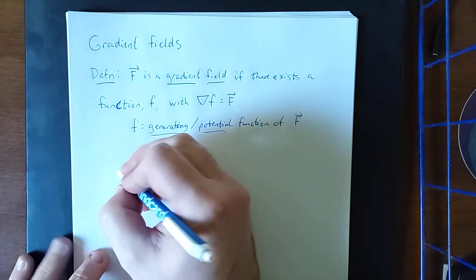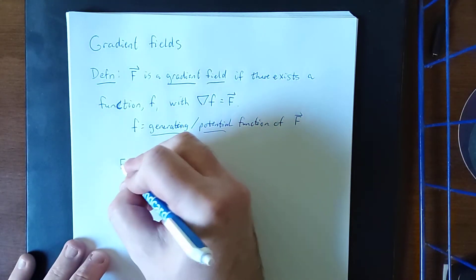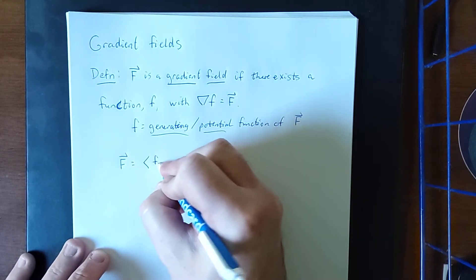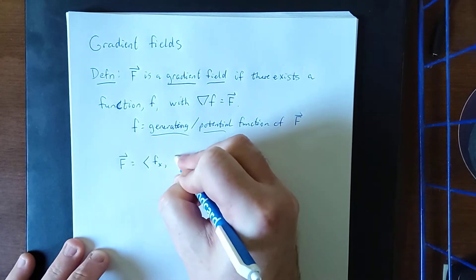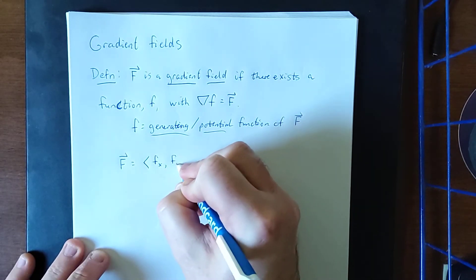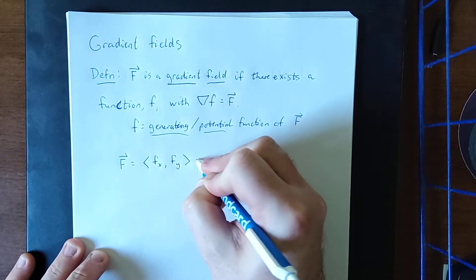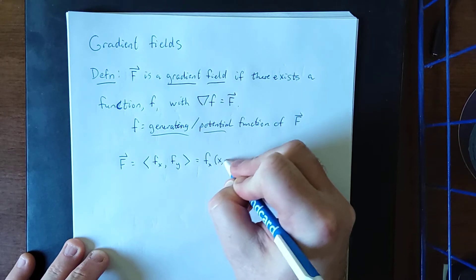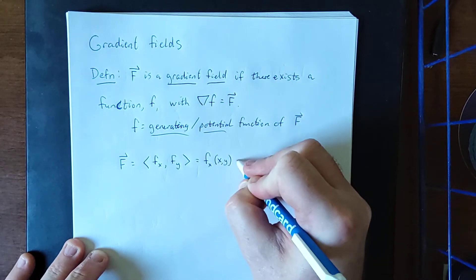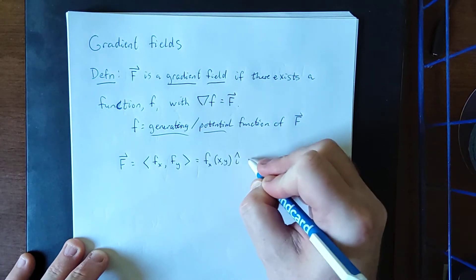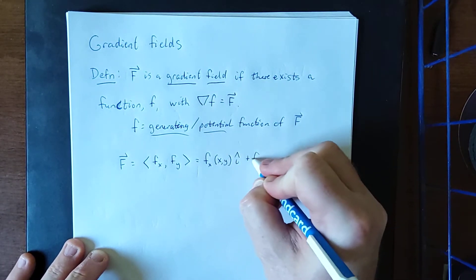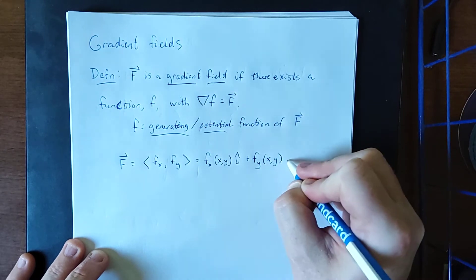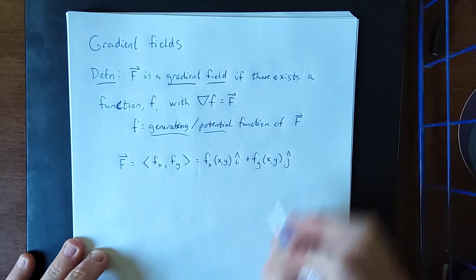Generally speaking, in two dimensions, that means you will be able to take a couple of partial derivatives. The partial derivative of f with respect to x of (x, y) gives the i-component, and the partial derivative of f with respect to y gives the j-component.